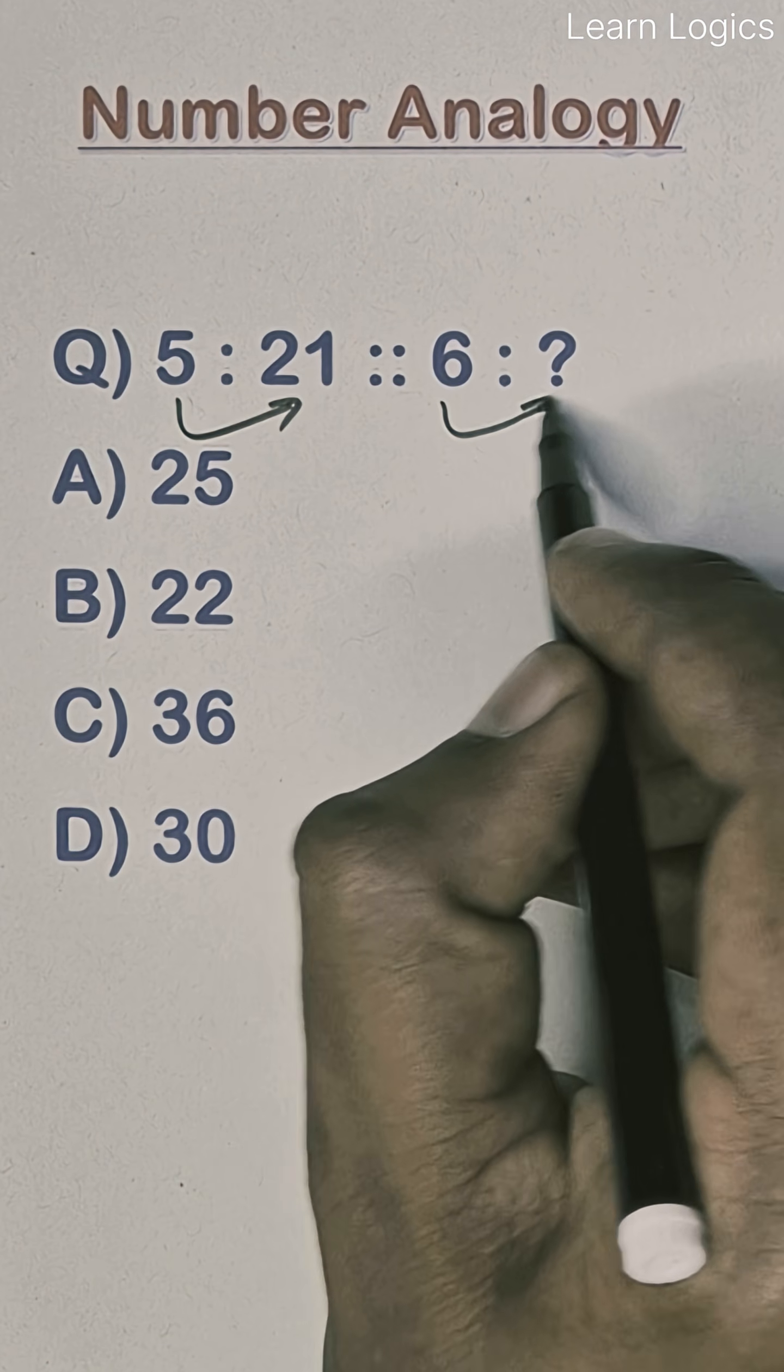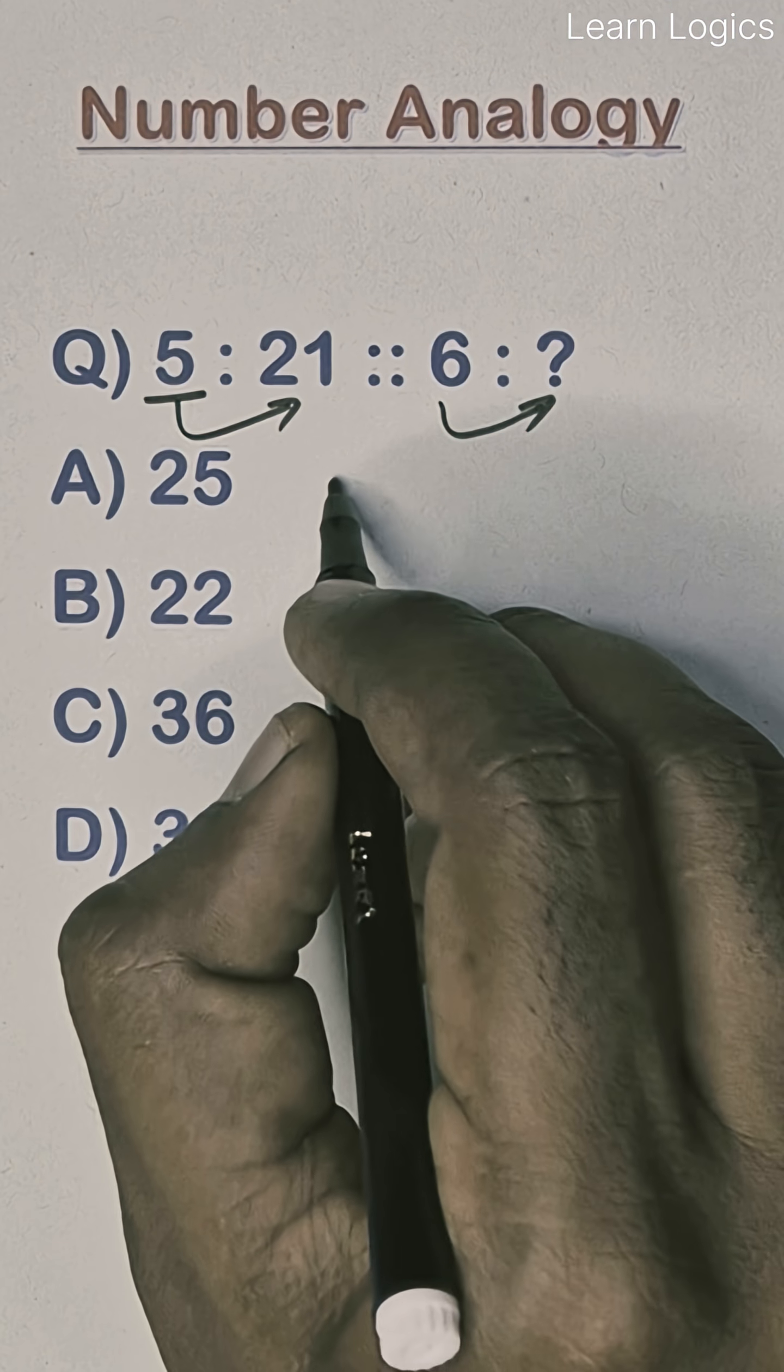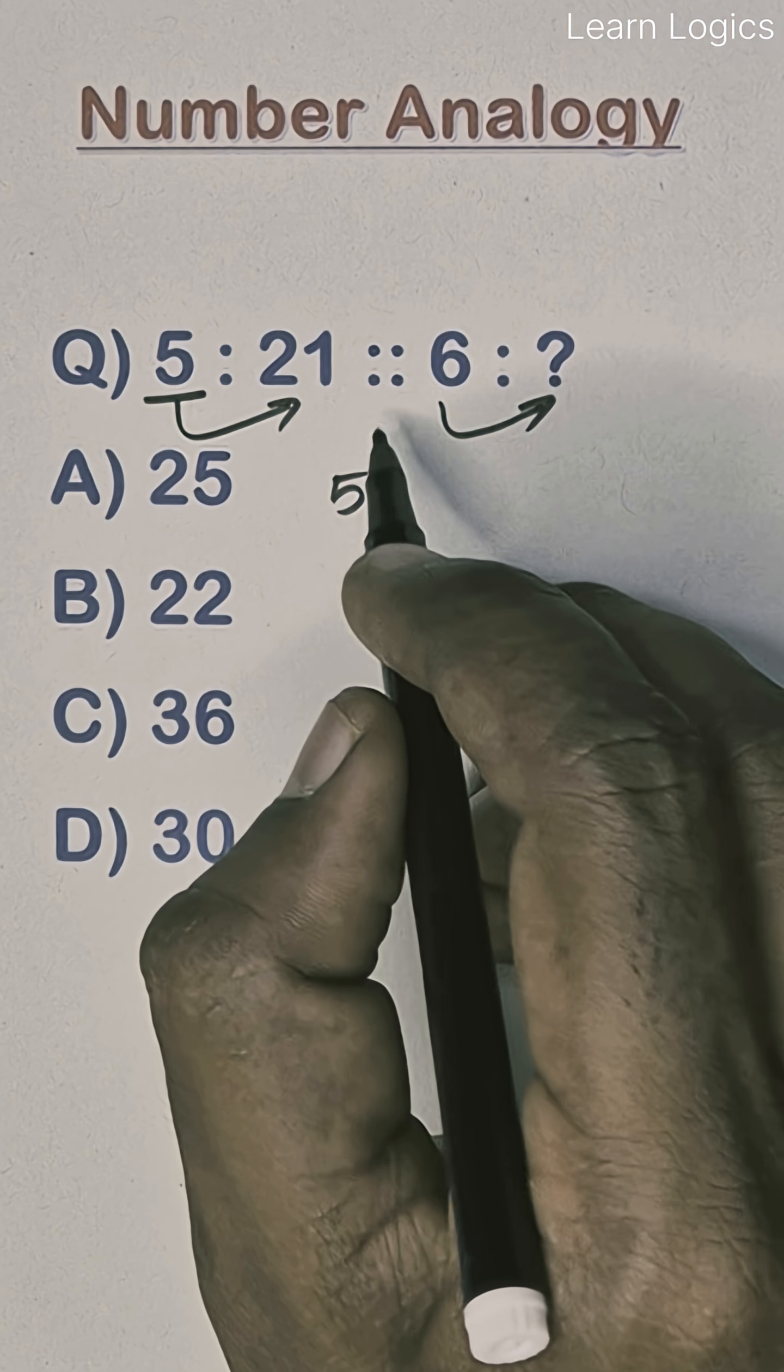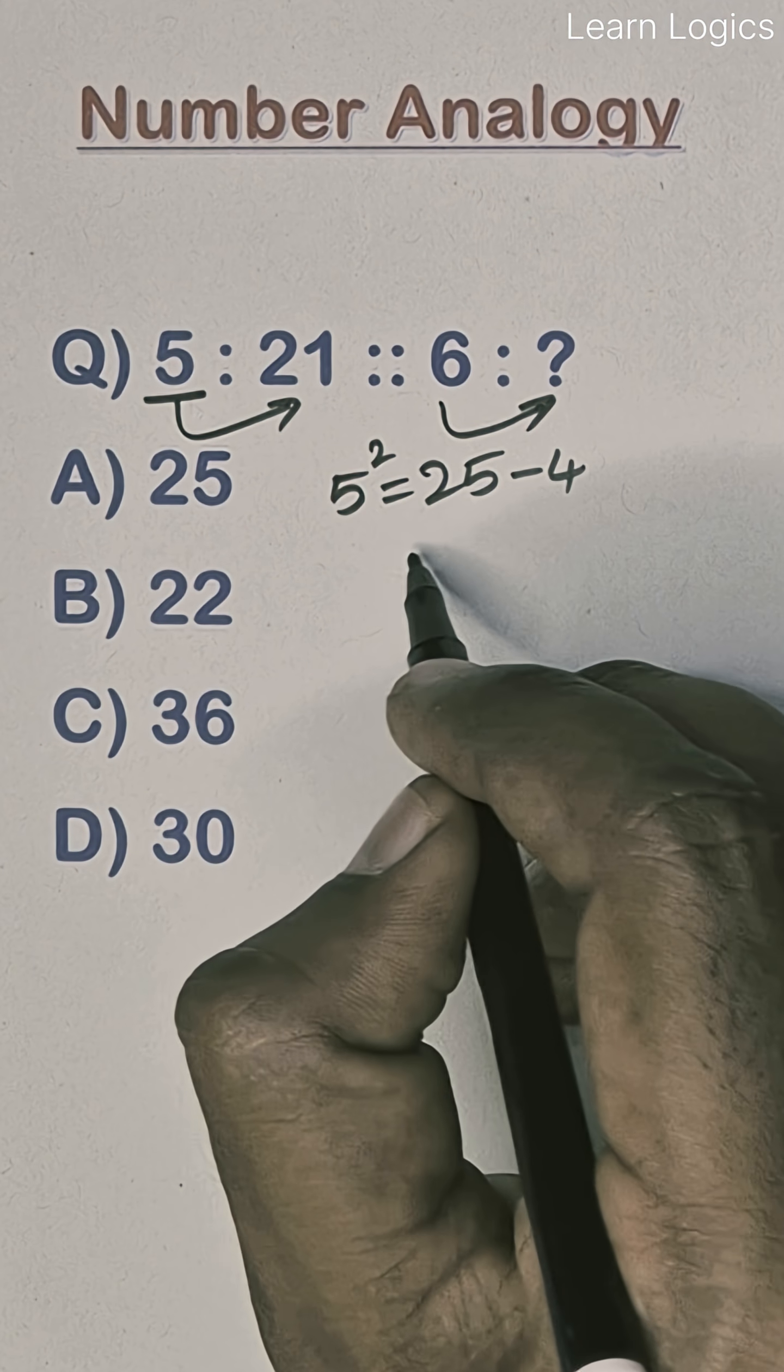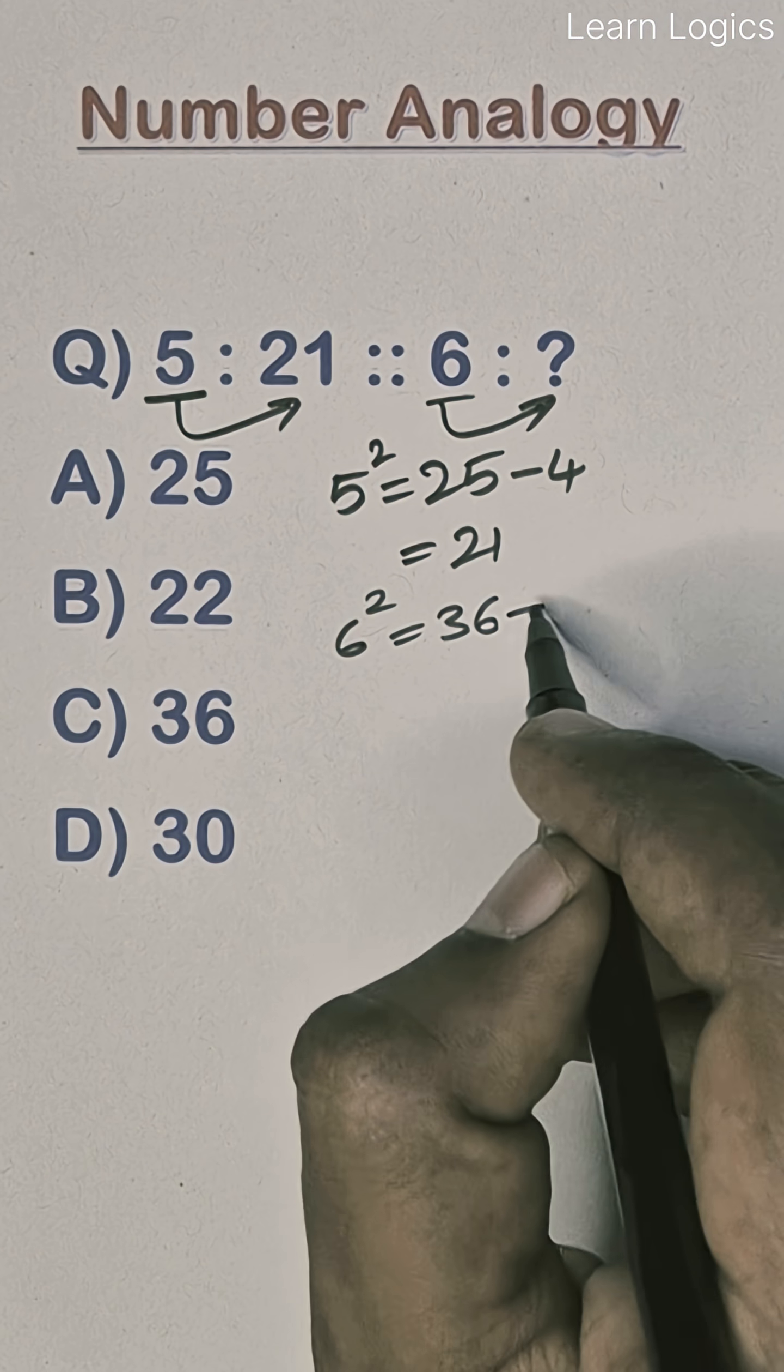Hello friends, find the relation between this analogy question. This is a new trick. So take 5, 5 square. Take 5, 5 square is 25. 25 minus 4, 25 minus 4 is 21.